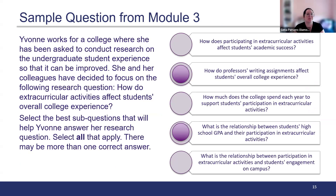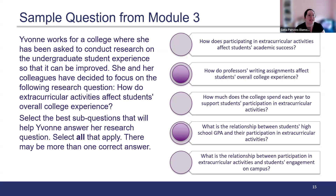Yvonne works for a college where she has been asked to conduct research on the undergraduate student experience so that it can be improved. She and her colleagues have decided to focus on the research question: how do extracurricular activities affect students' overall experience? Students are asked to select the best sub-questions to help Yvonne answer her research question. The correct answers are: how do professors' writing assignments affect students' overall college experience, and what is the relationship between students' high school GPA and their participation in extracurricular activities?